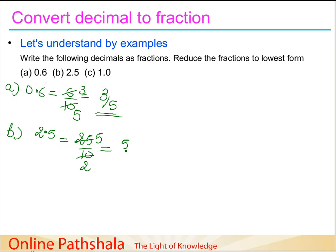5 times 5 equals 25. So this value becomes 5 by 2, the lowest form of this decimal in fraction.